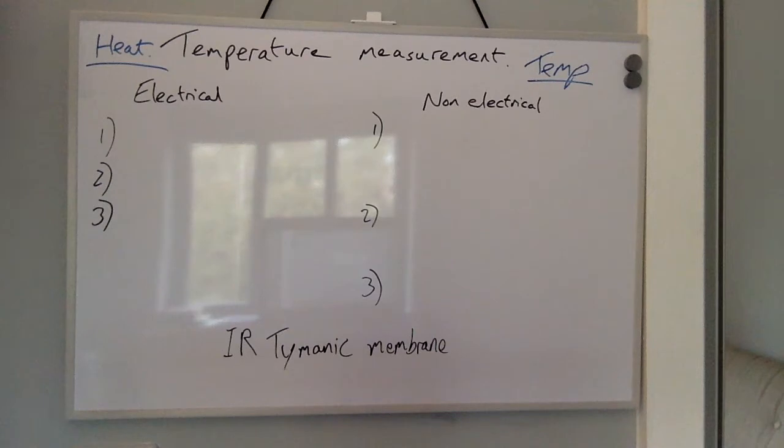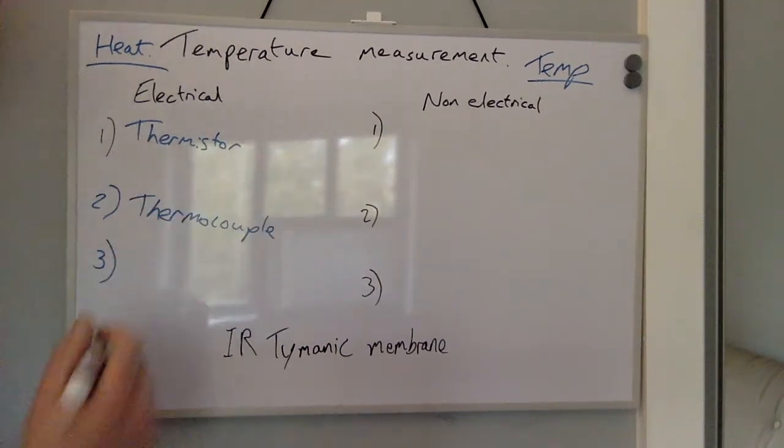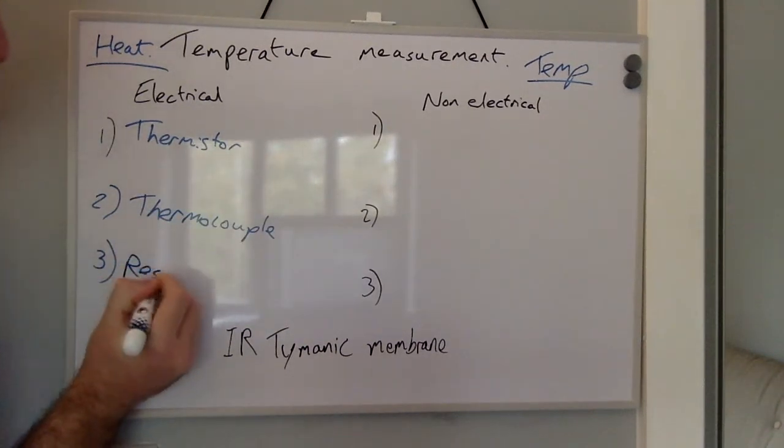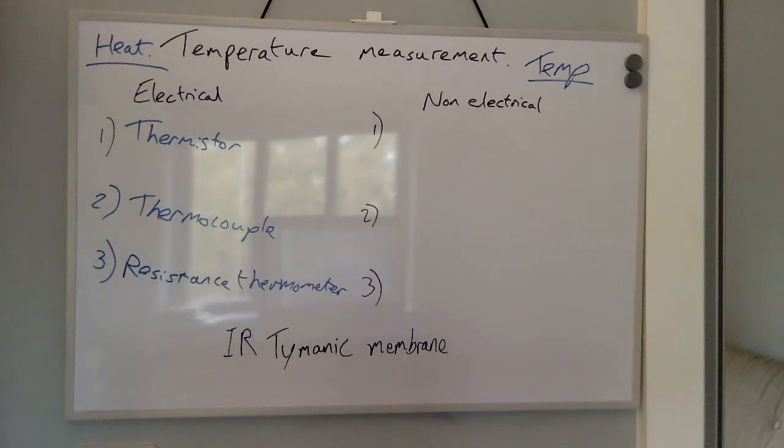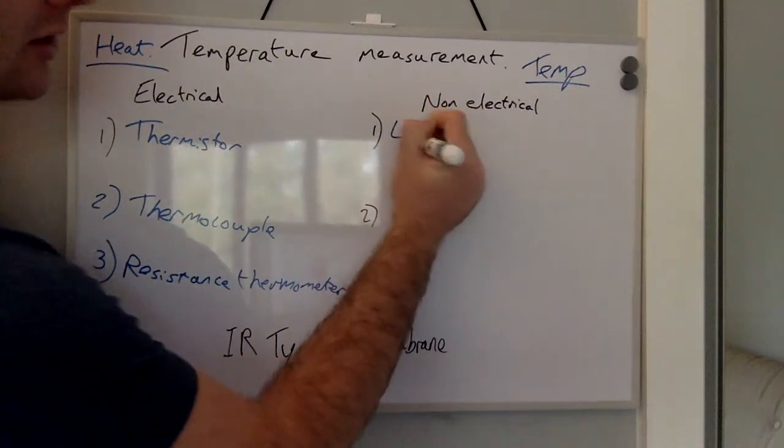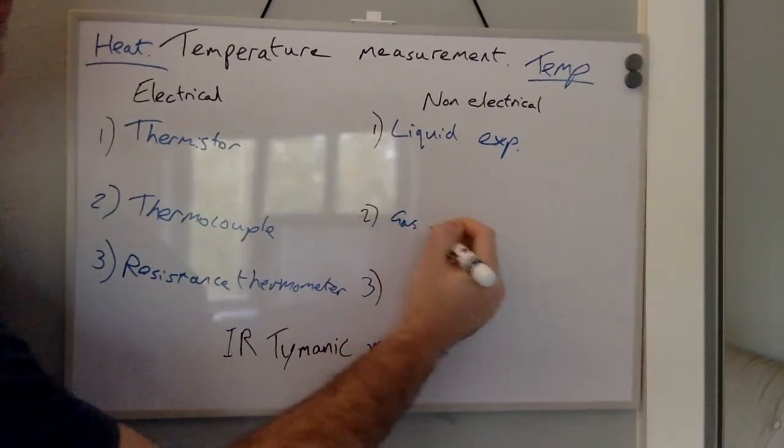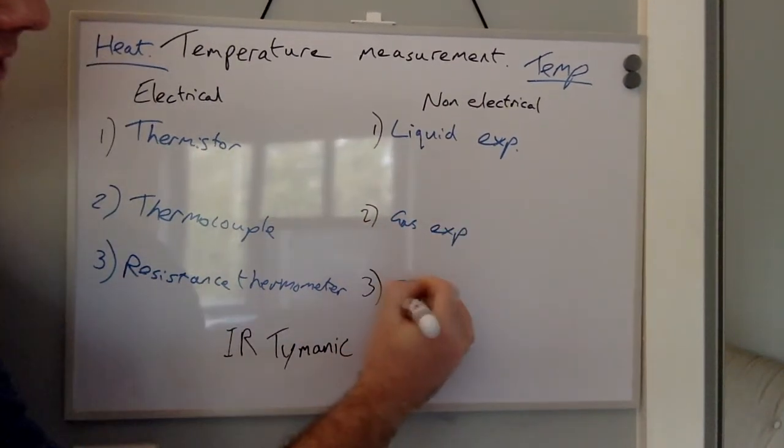Examples of electrical thermometers include the thermistor, thermocouple, and the resistance thermometer. And for non-electrical thermometers, we have liquid expansion, gas expansion, and a bimetallic strip.